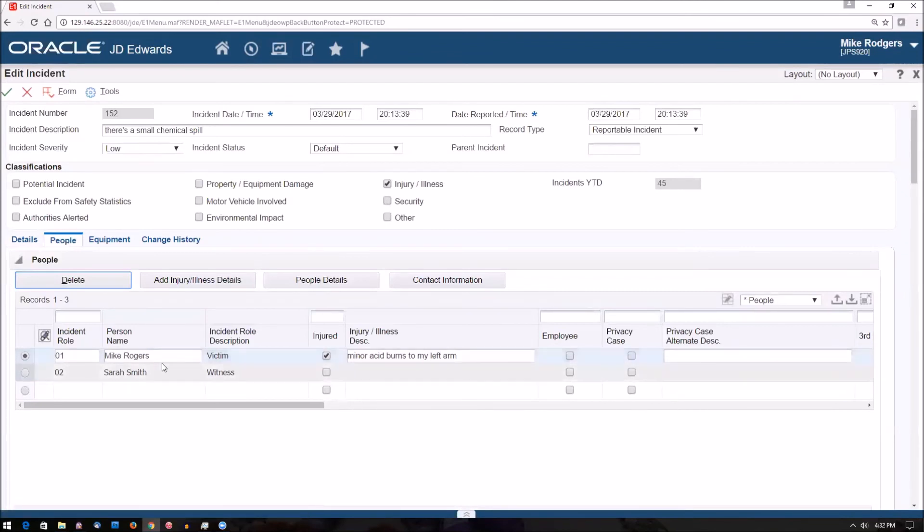Alright. We have Mike Rogers and Sarah Smith. Those are the right people. Alexa doesn't know that I spell my name with a D in it, so I can correct that. I have that I was injured with minor acid burns to my left arm. That's all correct. And then both of us are employees. We can check that. And that's pretty much all we have to do. We can save our incident or make any other changes if we needed to.